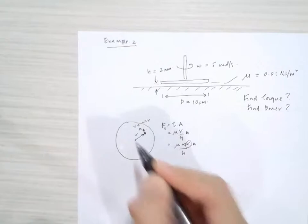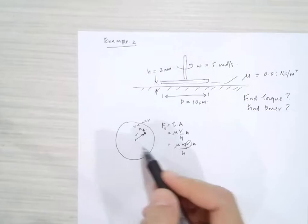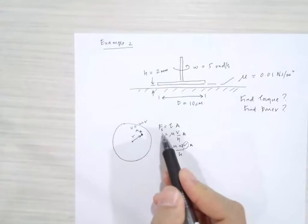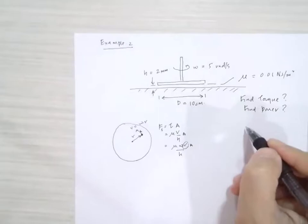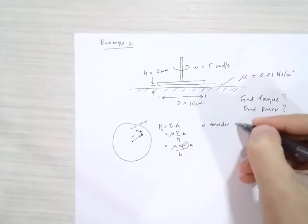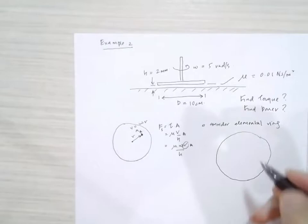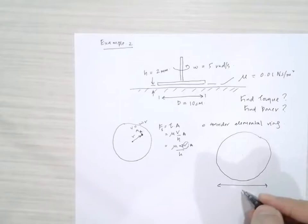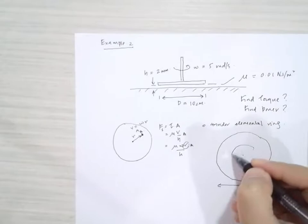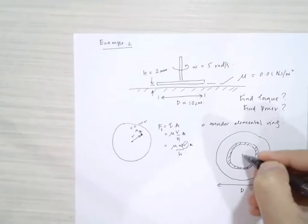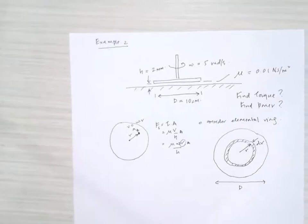Different points on the disk have different velocities depending on the distance from the axis of rotation, so the shear forces are not constant. In order to calculate the total force, total torque, and power, we need to find a region where the shear forces are actually constant. Since shear force is dependent on r, we can consider an elemental ring. The thickness of this ring is dr.